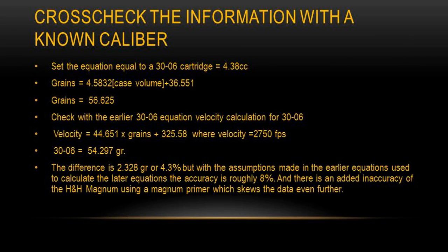Next, use the earlier 30-06 specific equation to calculate the grains necessary to achieve 2750 feet per second, which is calculated at 54.297 grains. The difference is 2.328 grains, or 4.3 percent, but the assumptions made in the earlier equations used to calculate the later equations make the accuracy closer to 8 percent.